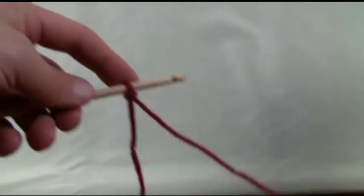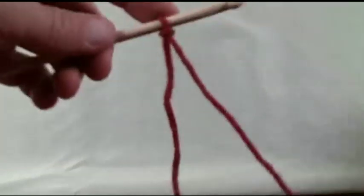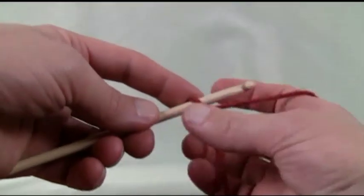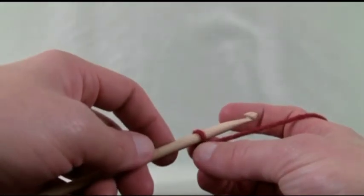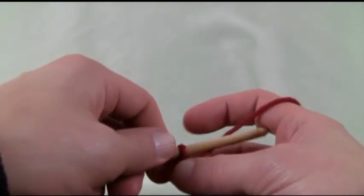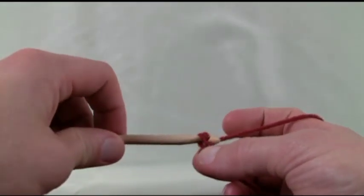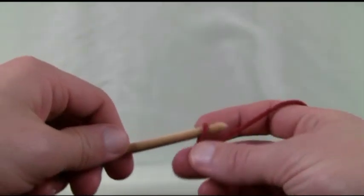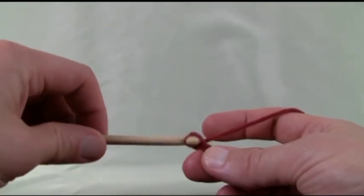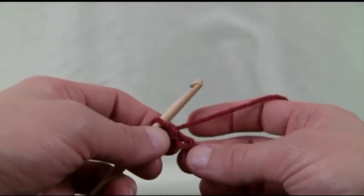To create your foundation we're just going to chain three as normal. So this is already considered as one. Let's just grab the material, pull it through, so that's number two. And grab the material and pull it through, so there's three.